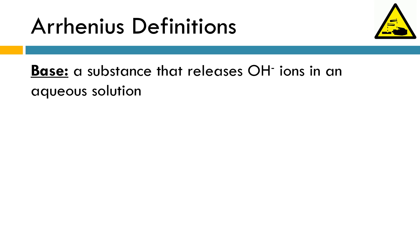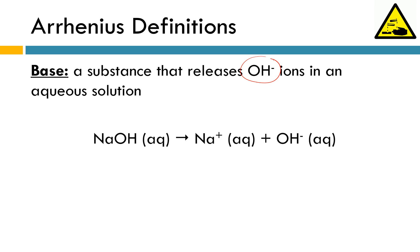According to the Arrhenius definition, as we talked about in the previous lesson, bases release hydroxide ions into an aqueous solution. Usually that's just represented like this: you've got something like sodium hydroxide, which is a strong base. You dissolve it in water, and that's going to dissociate or break apart into sodium ions and hydroxide OH- ions.